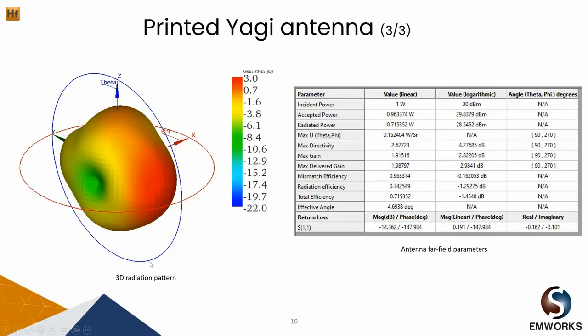On the left we can see the 3D radiation pattern of the antenna. The antenna again has maximum gain of 3 dB which is along the Y axis.